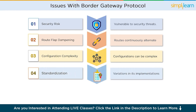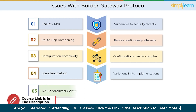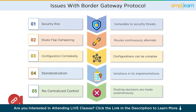Lack of standardization. Although BGP itself is a standard protocol, there can be variation in its implementation across different vendors and network devices, leading to potential interoperability challenges. Lack of centralized control: BGP operates on a decentralized model where routing decisions are made autonomously by routers. This lack of centralized control can make it challenging to enforce global routing policies or address routing inconsistencies.